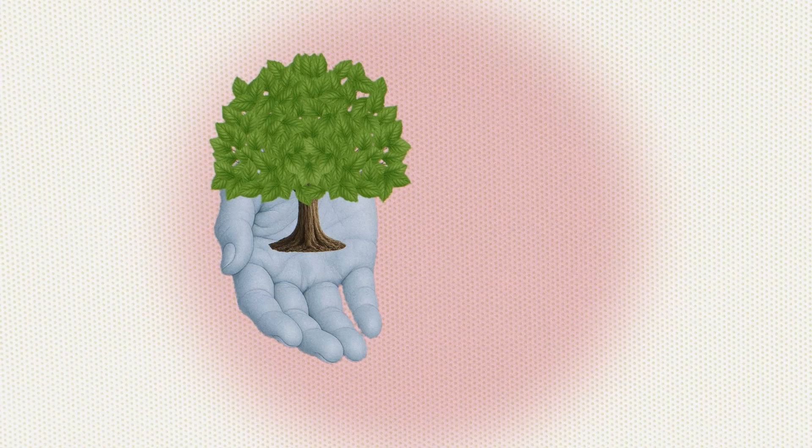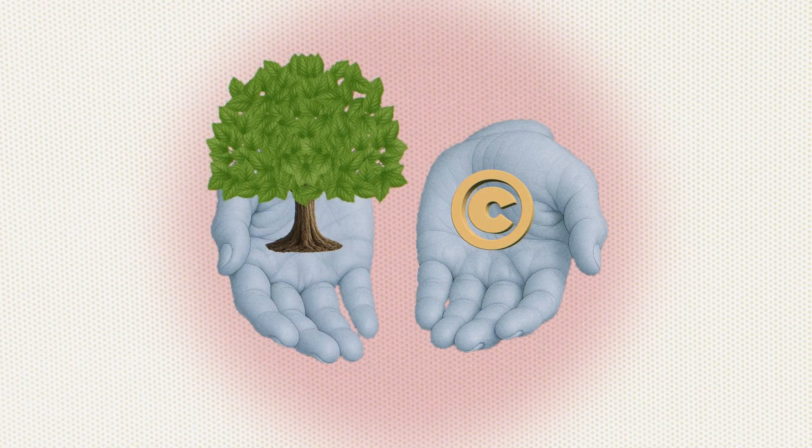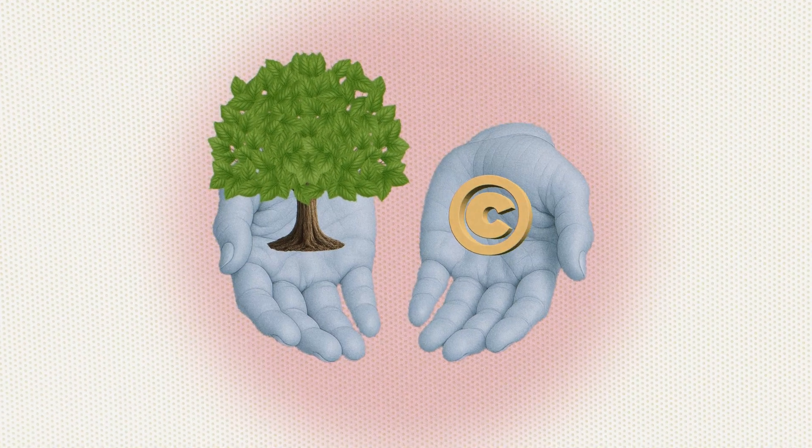The two main principles of the circular economy are circular patterns of resource use on the one hand, and open patterns of information use on the other. A tree in the forest is a good example of the circular economy.